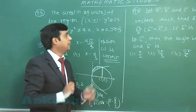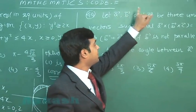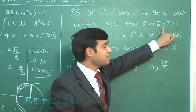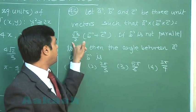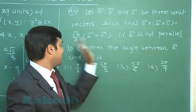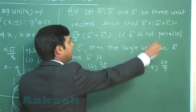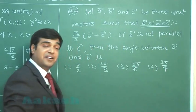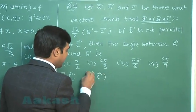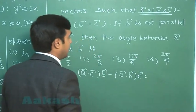Let us move to question 44 from vectors. Let vector a, vector b, and vector c be 3 unit vectors such that a cross (b cross c) equals (√3/2)(b vector plus c vector), and b is not parallel to c. Find the angle between vector a and vector b. Applying the vector triple product formula directly, this gives (a·c)b minus (a·b)c.